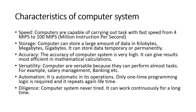The very first characteristic is speed. Computers are capable of carrying out tasks at fast speeds, from 4 MIPs to 100 MIPs. What do you mean by MIPs? Million Instructions Per Second. It means a computer can process 4 million to 100 million instructions in one second. That's a very fast speed.